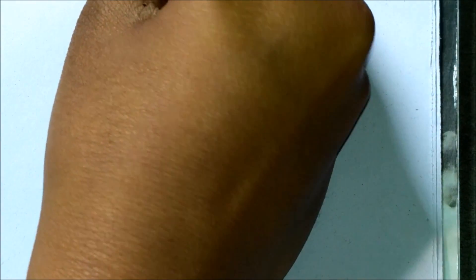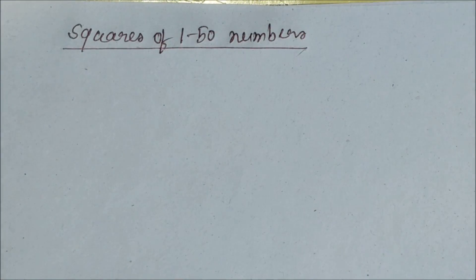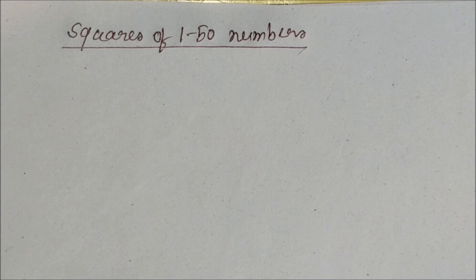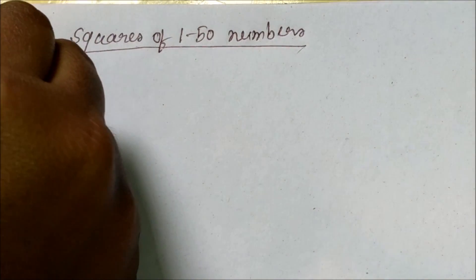Today I will discuss square of numbers from 1 to 50. Squares of 1 to 50 numbers: 1 square equals 1.